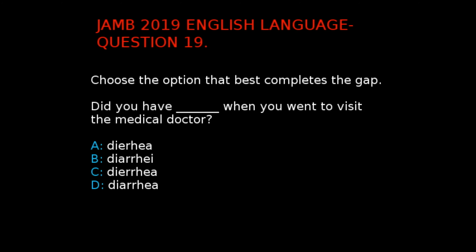Jan 2019 English Language Question 19. The question says, choose the option that best completes the gap: 'Did you have dash when you went to visit the medical doctor?' The options present different spellings of diarrhea. Only one has the correct spelling. The correct answer is D. Diarrhea, because options A, B, and C all have incorrect spellings. D is therefore the only option with the correct spelling.